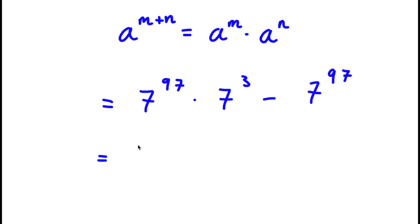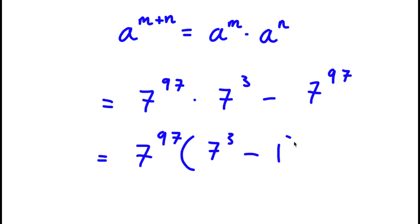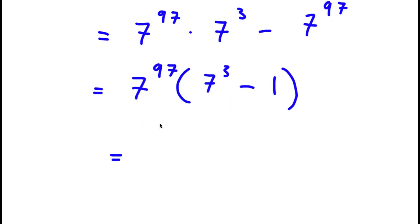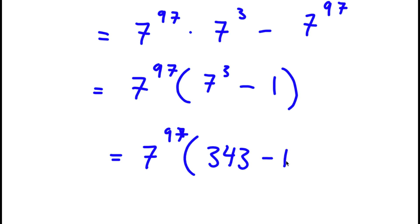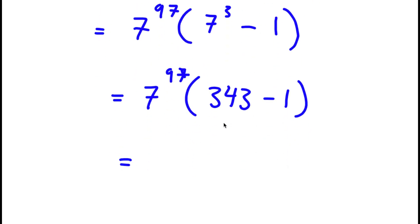From here, if I factor out 7 to the power of 97, I get 7 to the power of 97 times the quantity 7 to the power of 3 minus 1. Now 7 to the power of 3 is equal to 343. So times 343 minus 1, that's 342. So my answer is 342 times 7 to the power of 97.